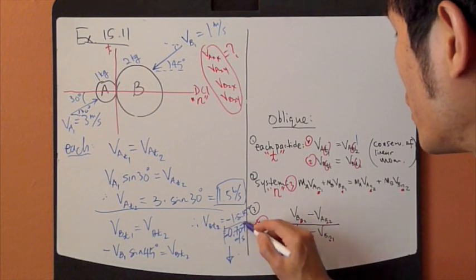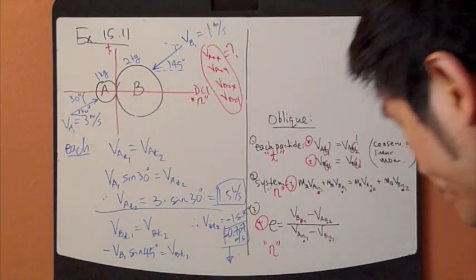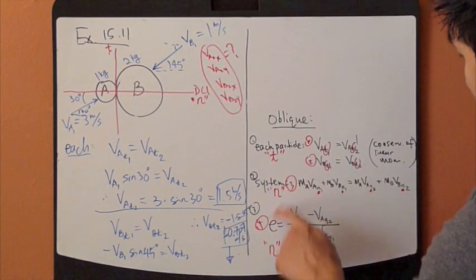So we're going to solve for two to four unknowns. Just keep going, applying the third and fourth equations.